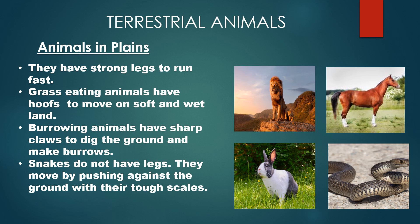Grass-eating animals like horses and cows have toes in the form of hooves, which help them move on soft and wet land. Burrowing animals like rabbits and moles have sharp claws to dig the ground and make burrows. Snakes do not have legs; they live in narrow holes or ant hills and move by pushing against the ground with the tough scales on their body.